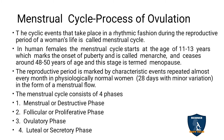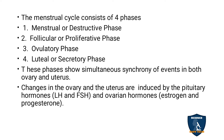The menstrual cycle consists of 4 phases: the menstrual or destructive phase, the follicular phase or proliferative phase, the ovulatory phase, and the luteal or secretory phase.